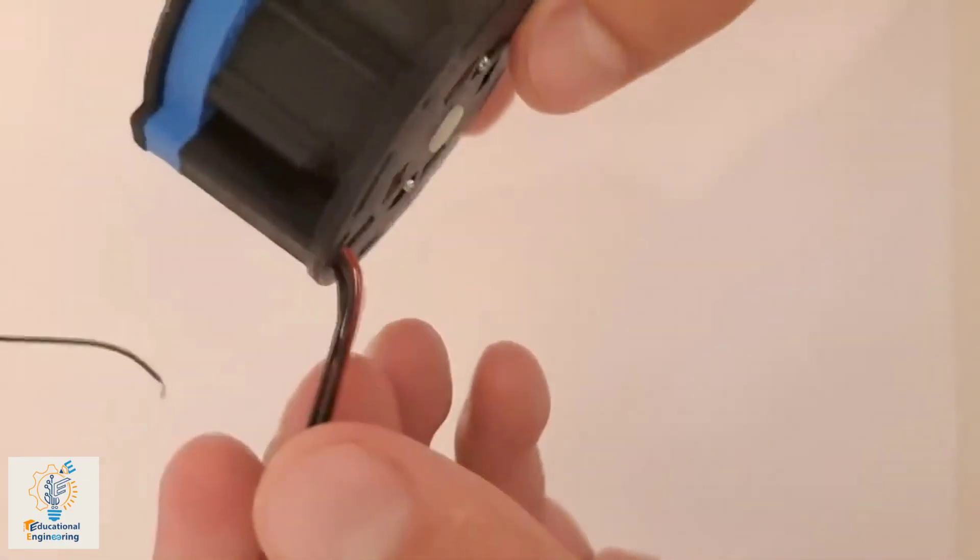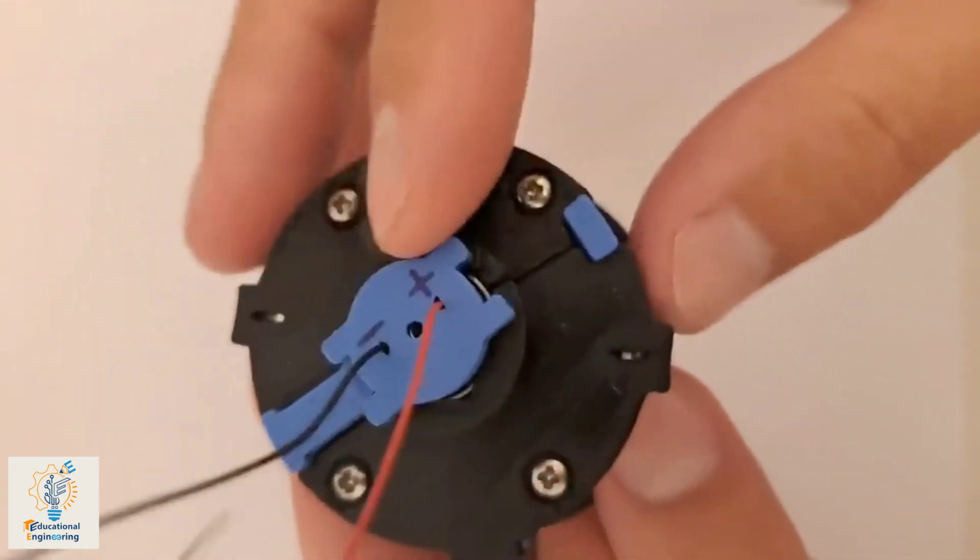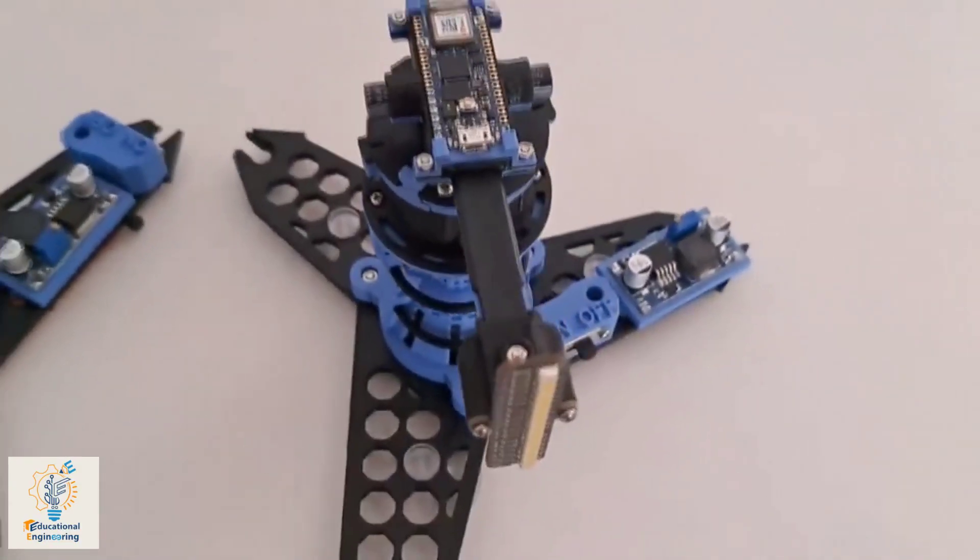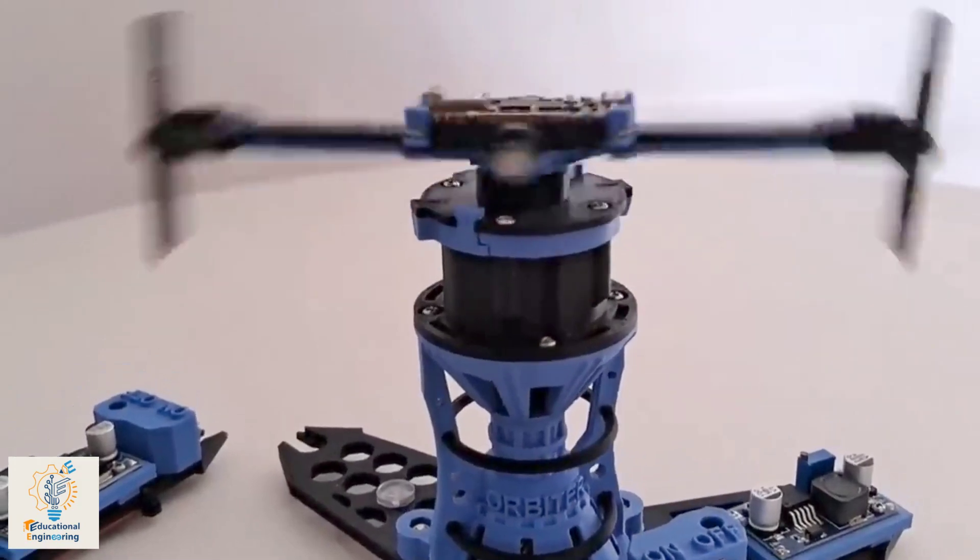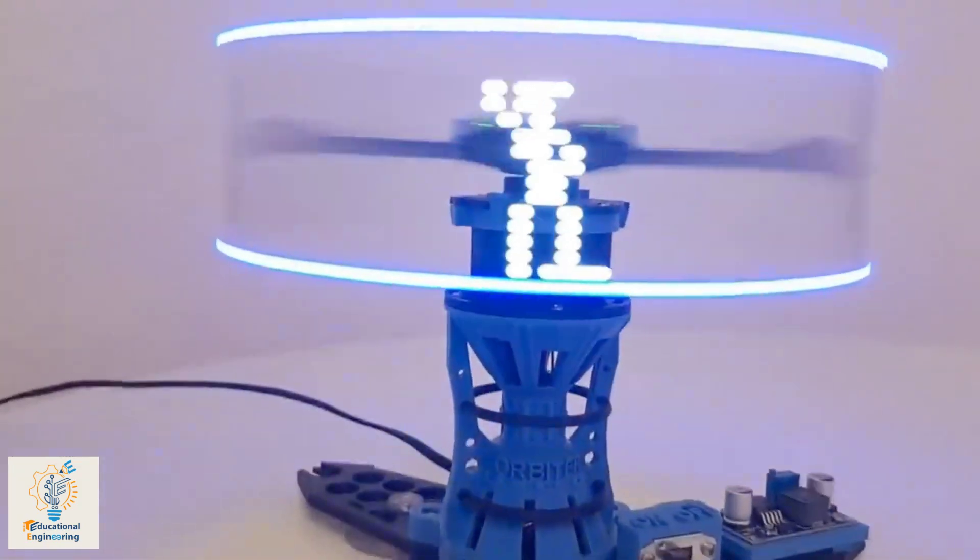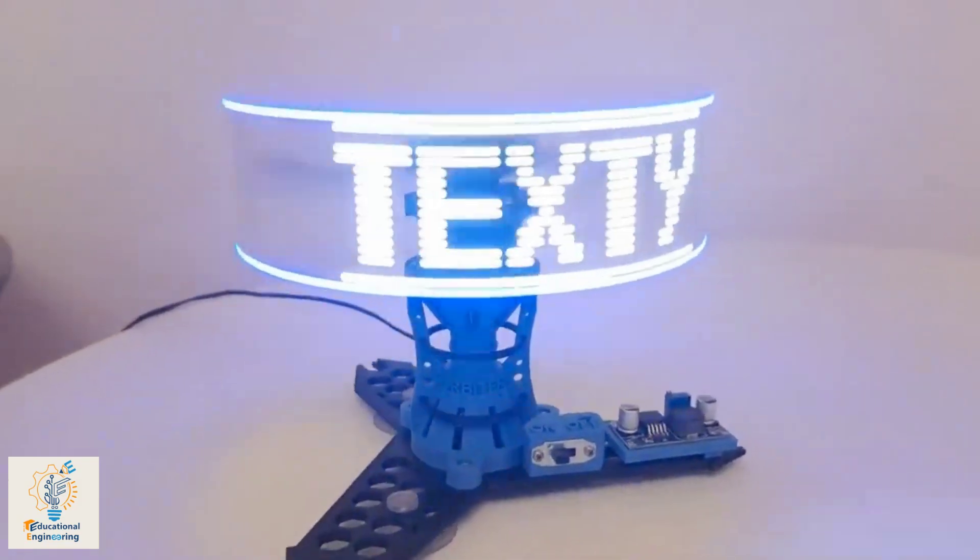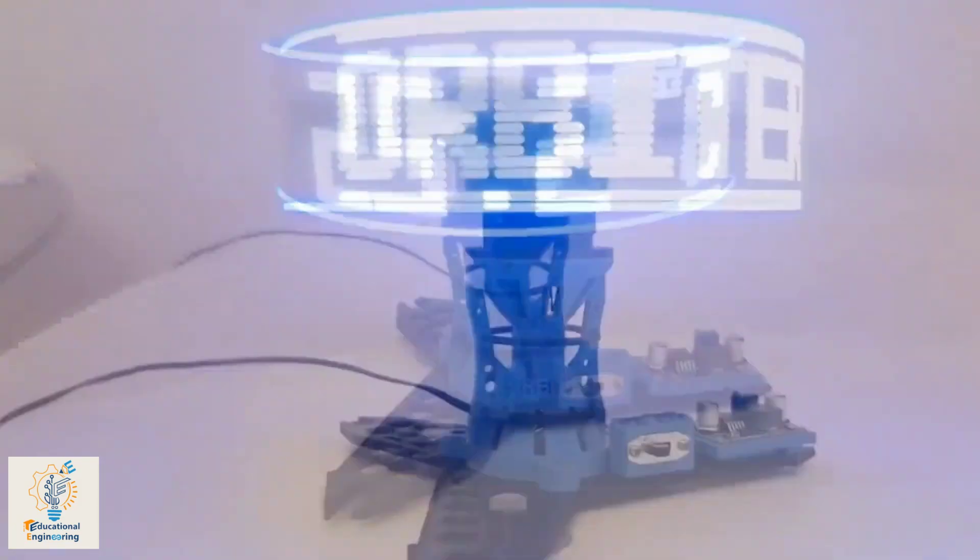All this is possible due to a motor and a commutator unit placed at the center that makes around 2400 revolutions per minute. With this, you can display pixel animations, pictures, texts, numbers, and much more.